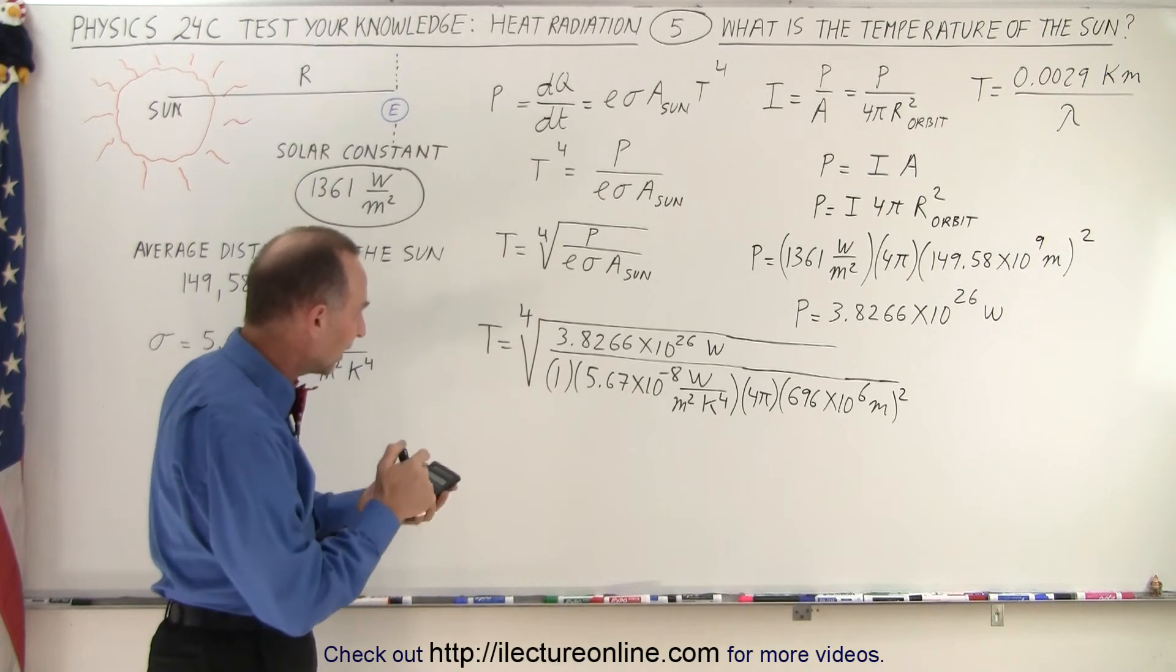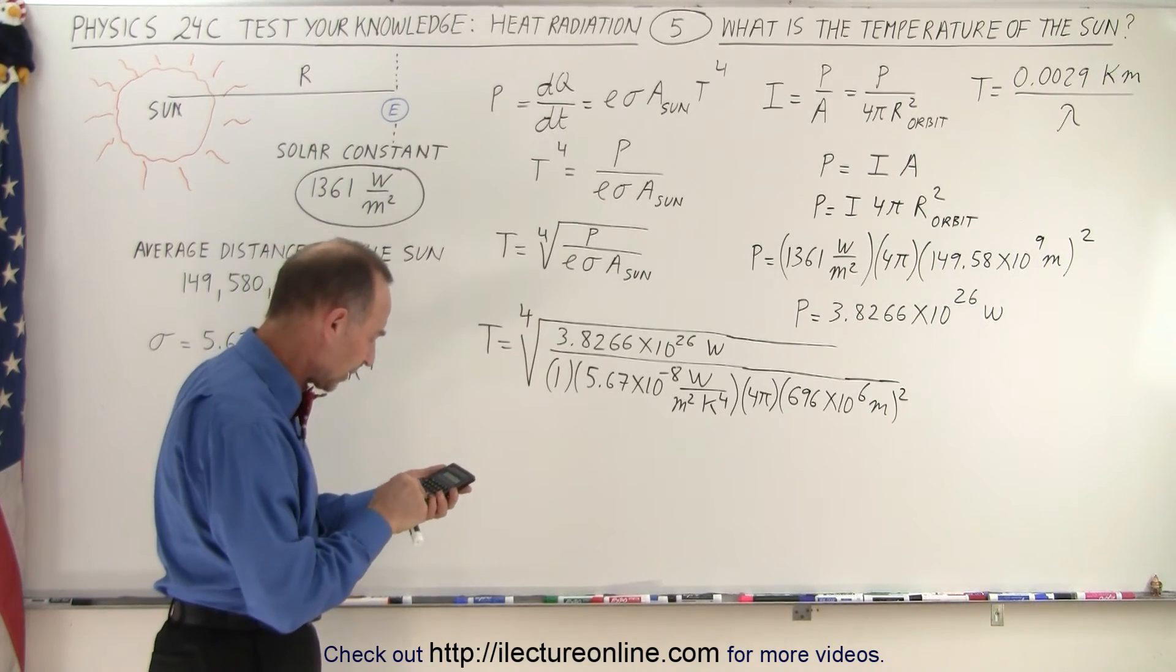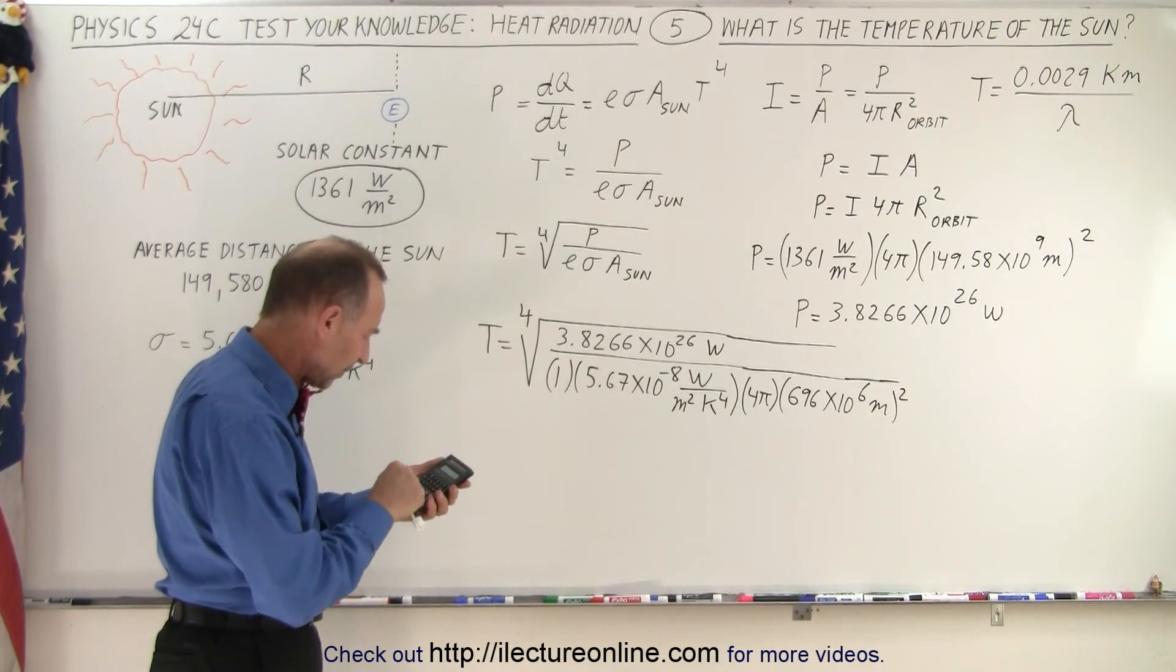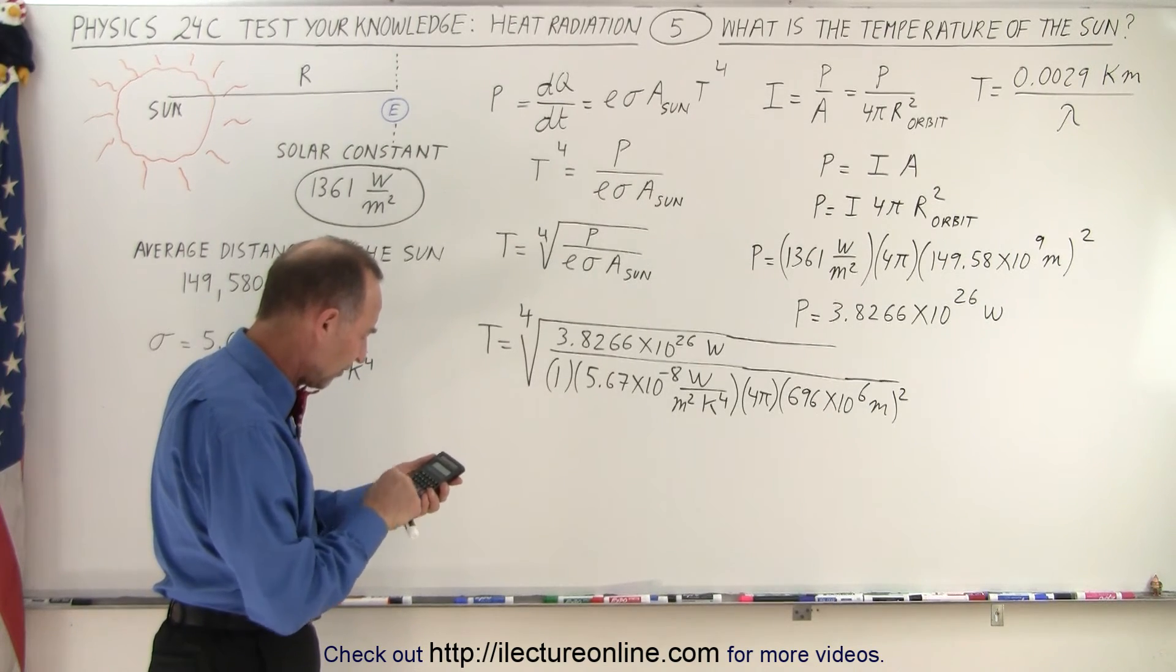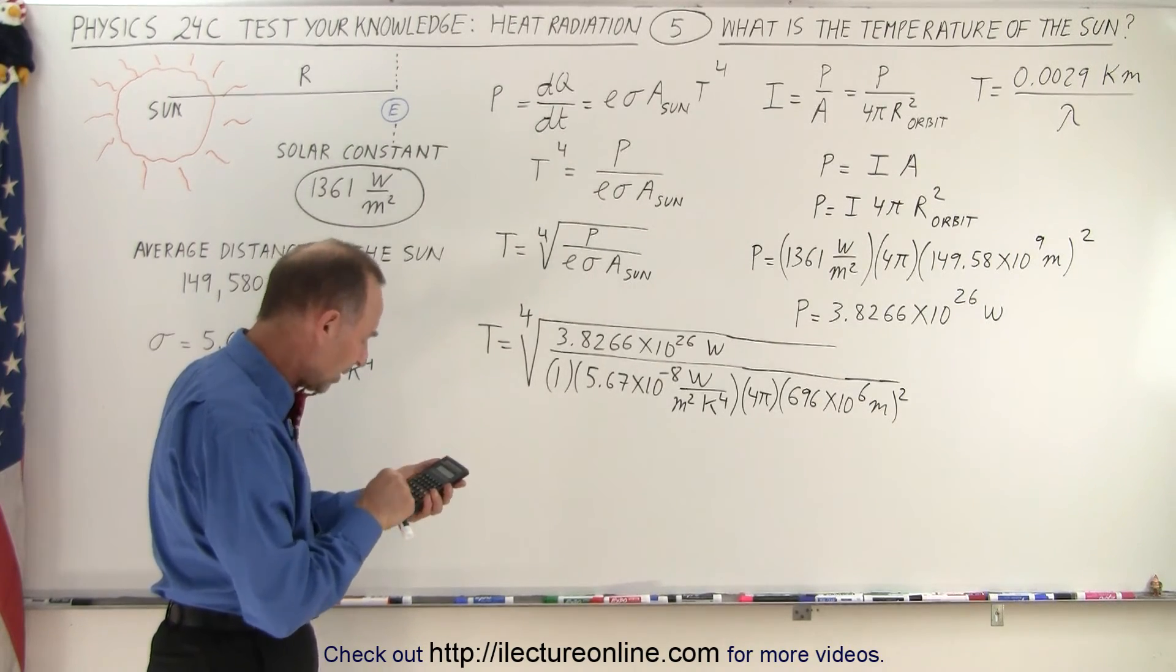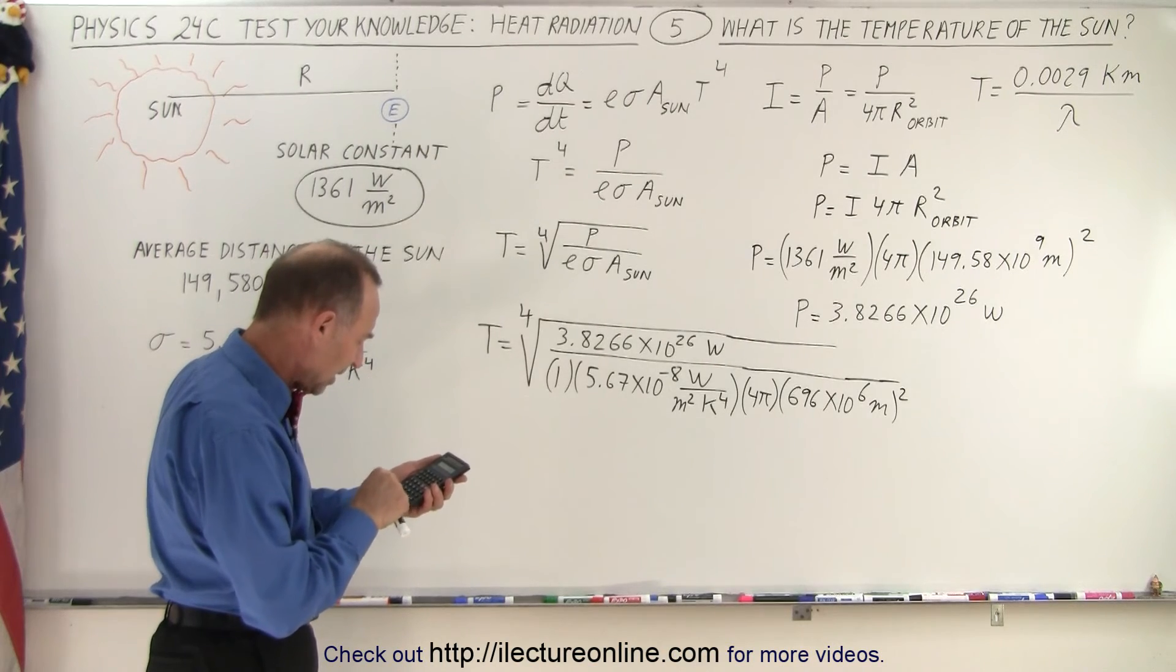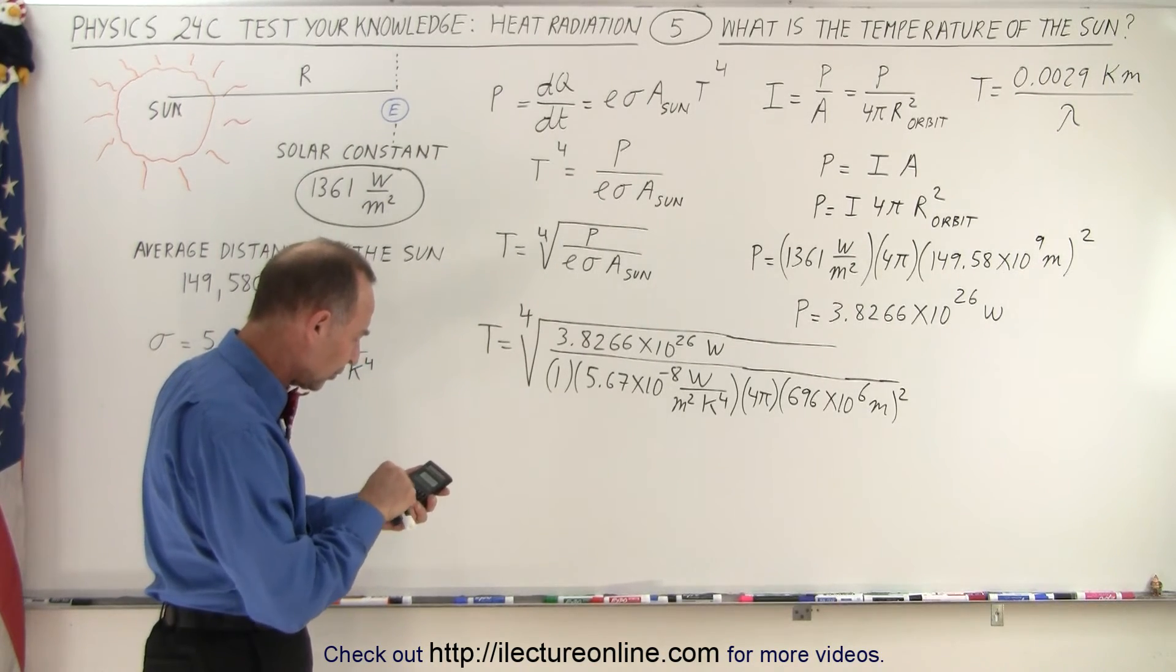So let's divide that by 5.67×10⁻⁸, divide by 4, divide by π, divide by (696×10⁶)², equals, take the fourth root, and we get 5,770 degrees Kelvin.